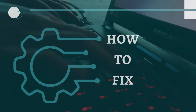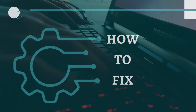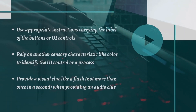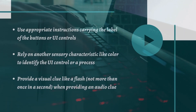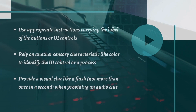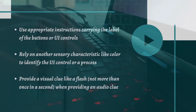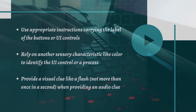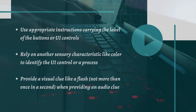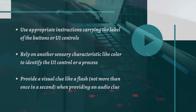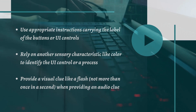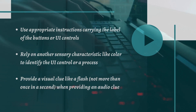Now let's look at ways how we can fix them. One should use appropriate instructions carrying the label of the buttons or UI controls. One should rely on another sensory characteristic like color to identify the UI control or a process. One should provide a visual clue like a flash, not more than once per second, when providing an audio clue.